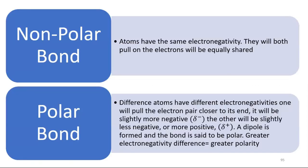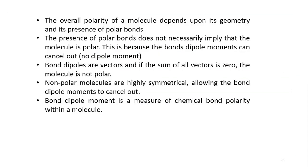A non-polar bond has atoms with the same electronegativity — electrons are equally shared. In a polar bond, different atoms have different electronegativities, so one atom pulls electrons closer, becoming slightly more negative while the other becomes slightly more positive — forming a dipole. The overall polarity of a molecule depends on its geometry and the presence of polar bonds.